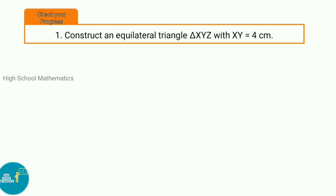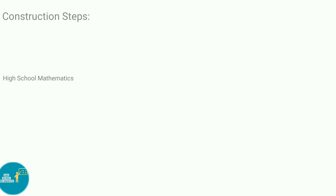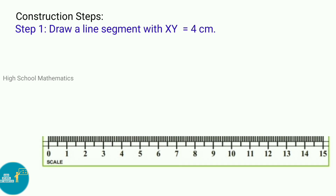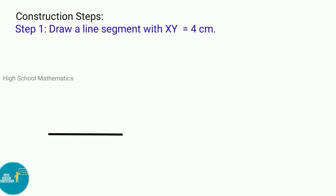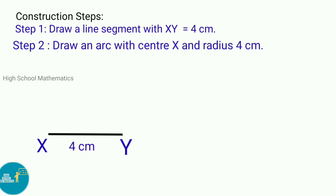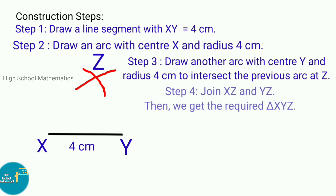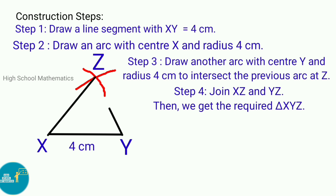Check your progress, first sum: Construct an equilateral triangle XYZ with XY equal to 4 cm. Construction steps — Step 1: Draw a line segment with XY equal to 4 cm. Step 2: Draw an arc with center X and radius 4 cm. Step 3: Draw another arc with center Y and radius 4 cm to intersect the previous arc at Z. Step 4: Join XZ and YZ. Then we get the required triangle XYZ.